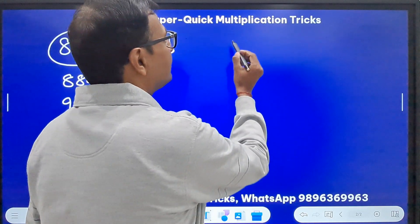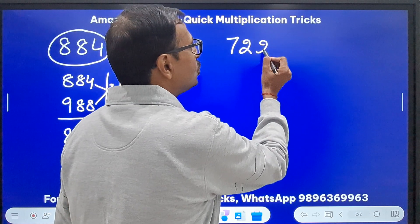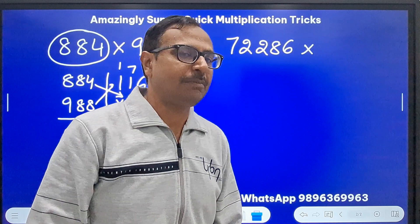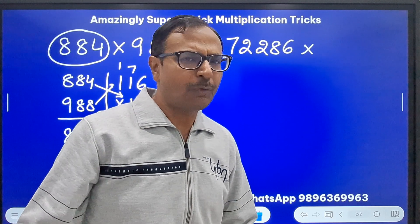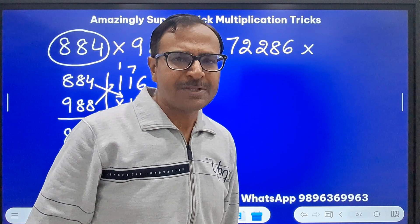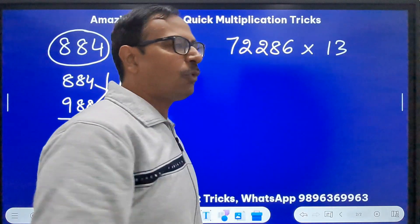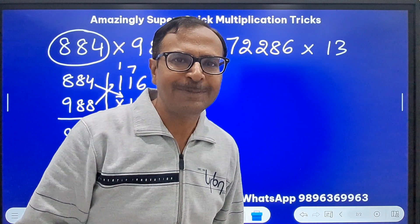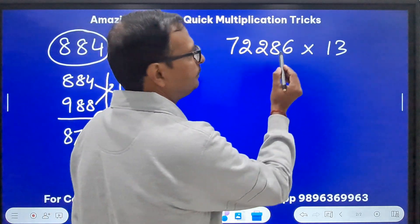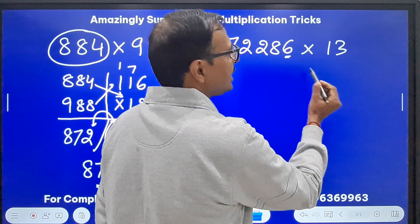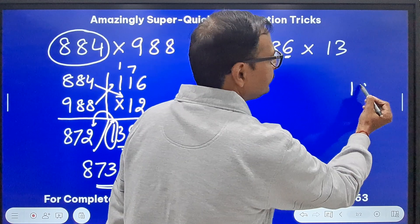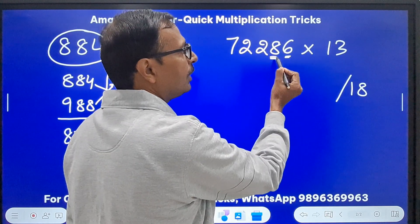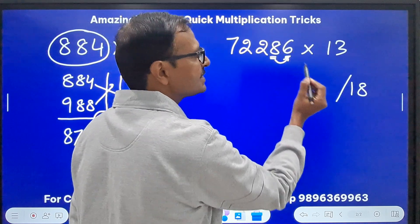Likewise, suppose you have big numbers like 72286. I can't take any big number, I am taking a five-digit number for reference, but I am sure you can work it out for ten-digit numbers also. Suppose you don't know 13 times table and still I want to multiply it by 13. You know 3 times table at least. So what do I have to do? Watch. 6 times 3 is 18, so I will write 18 here.